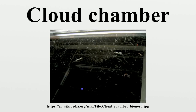Further developments were made by Patrick Blackett, who utilized a stiff spring to expand and compress the chamber very rapidly, making the chamber sensitive to particles several times a second. A cine film was used to record the images. The diffusion cloud chamber was developed in 1936 by Alexander Langsdorff. This chamber differs from the expansion cloud chamber in that it is continuously sensitized to radiation, and the bottom must be cooled to a rather low temperature, generally as cold as minus 26 degrees Celsius. Instead of water vapor, alcohol is used because of its lower freezing point. Cloud chambers cooled by dry ice are a common demonstration and hobbyist device.